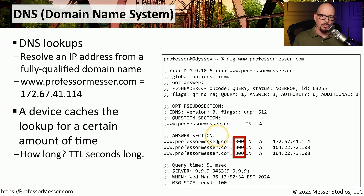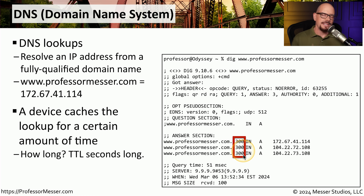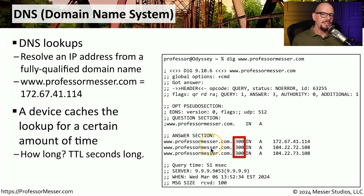The answer section shows that www.professormesser.com has a time to live of 300. This is an internet address — the A is for address — and there are three different IP addresses associated with the web server. This 300 value tells our local machine to keep this IP address in the cache for 300 seconds, which is five minutes. Once that five minutes has elapsed, our local cache removes that resolution, and if you want the IP address for that same server, you would need to perform another DNS query to update your cache for another five minutes. This allows me as the administrator to change the IP address in my DNS configuration, and I can feel relatively secure that most people will have an updated version within five minutes.